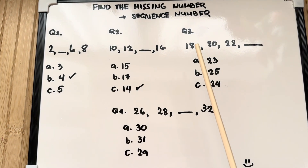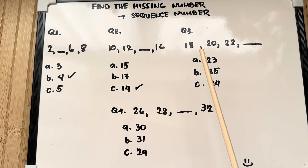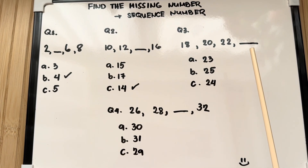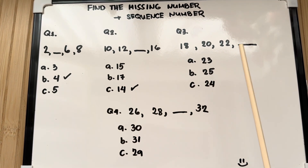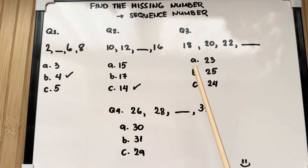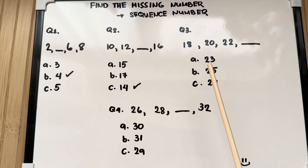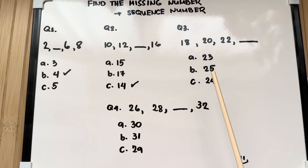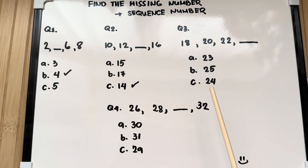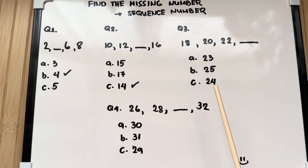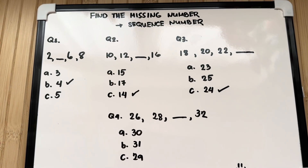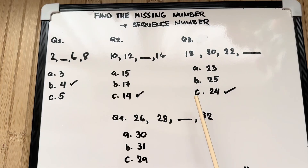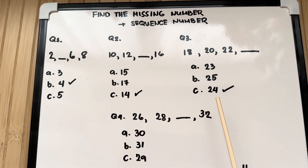Question number 3: 18, 20, 22, blank. Is it letter A: 23? B: 25? Or is it letter C: 24? And the right answer is letter C: 24.